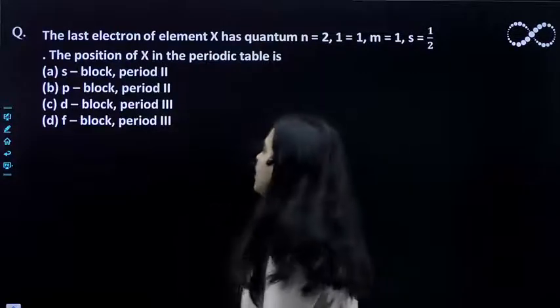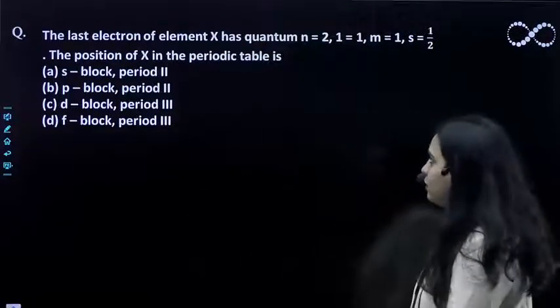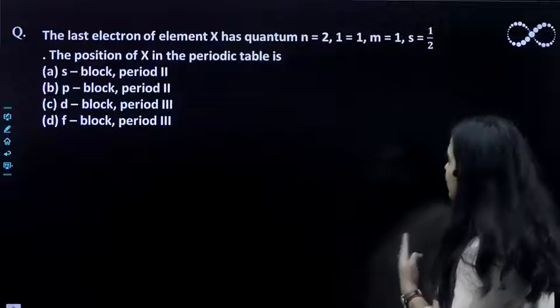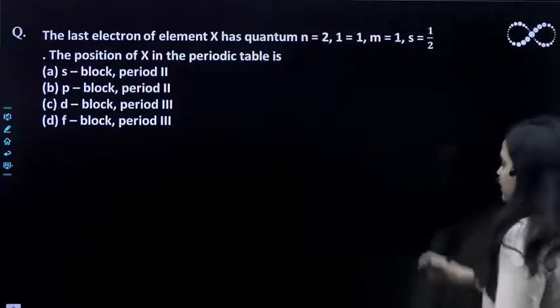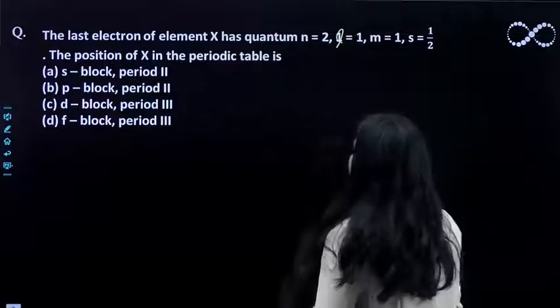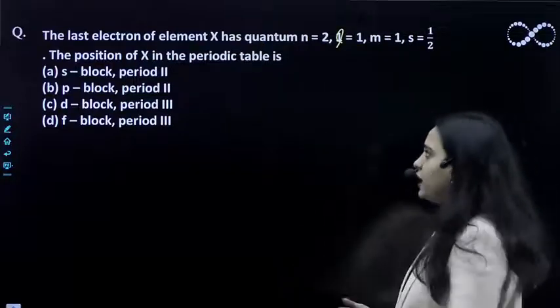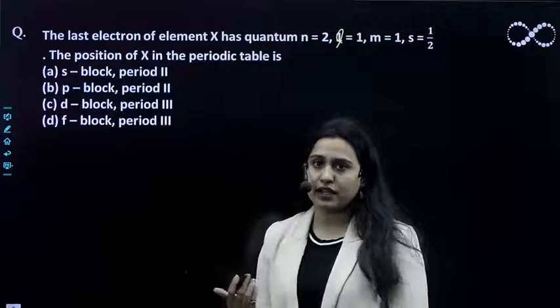Hello students, in this question you are asked: the last electron of element X has quantum number n=2, l=1, m=1, and s=1/2. This is l and it equals 1. The question asks for the position of X in the periodic table.